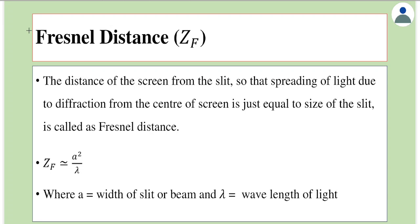Let us now study about Fresnel distance — some authors pronounce this as Fresnel, but most authors pronounce it as Fresnel, where the 's' is taken to be silent. By definition, Fresnel distance is the distance of the screen from the slit such that the spreading of light due to diffraction from the center of the screen is just equal to the size of the slit.